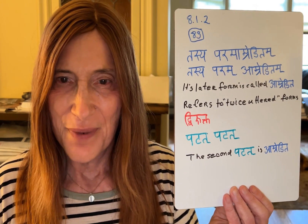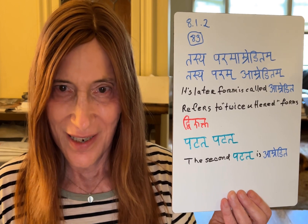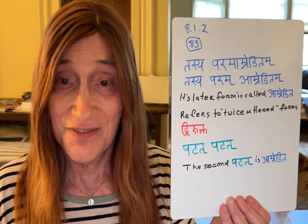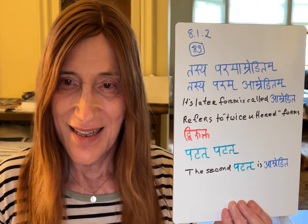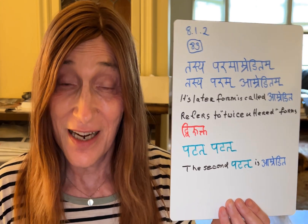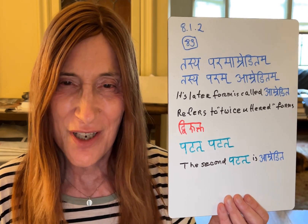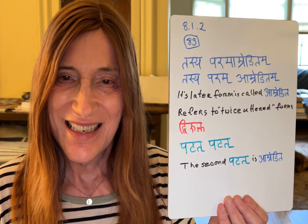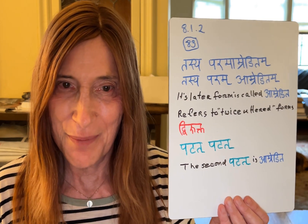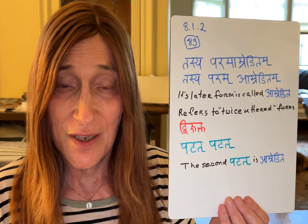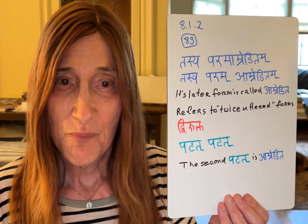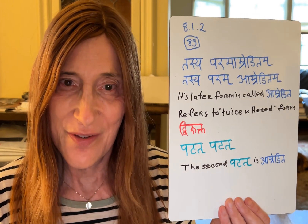Today we're talking about sutra 8.1.2, or 8/3 in Siddhanta Kaumudi. This is the second sutra of the eighth book. We also skipped over the entire seventh book, and we are now just a sutra away from the Tripadi, or Ashtadhyayi portion of the grammar, which will include all of the next almost 100 sutras that we are going to discuss.